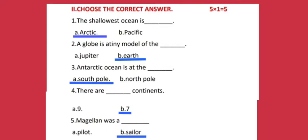Number five: Magdalene was a — Option A: Pilot, Option B: Sailor. The correct answer is Sailor.